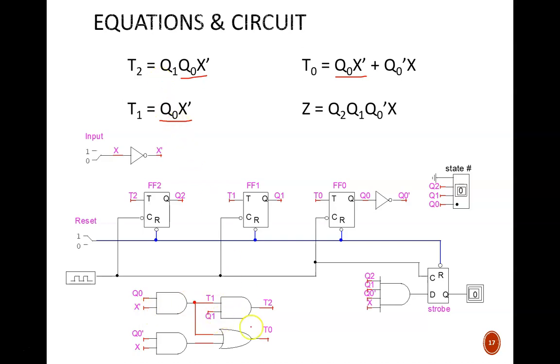This OR gate sums Q0 and X' with Q0' and X. Again, this is not required, but it is efficient.